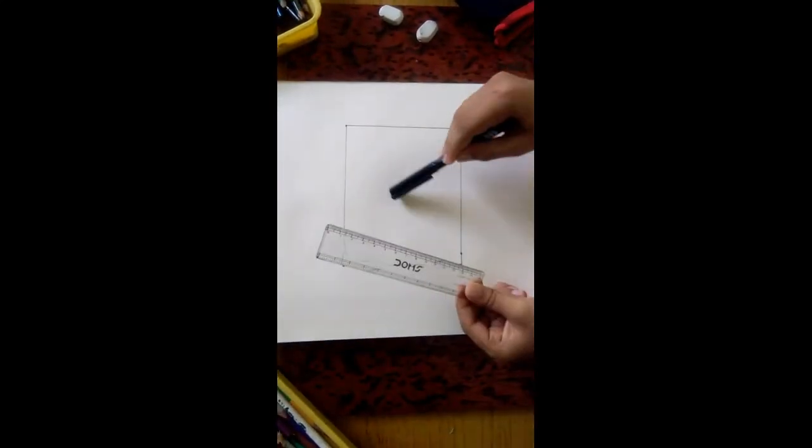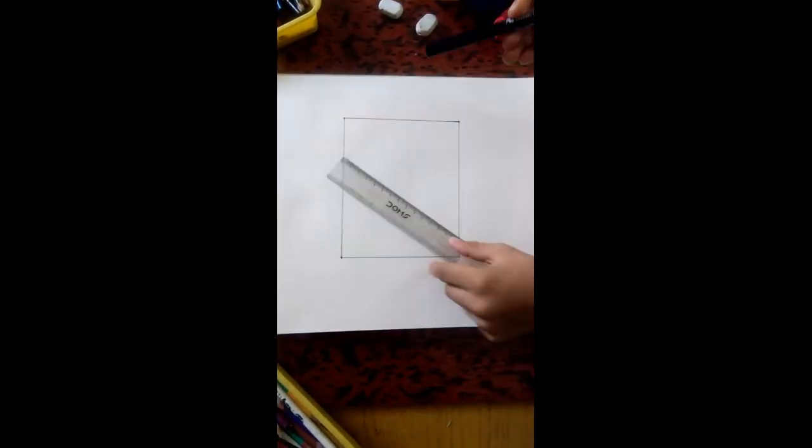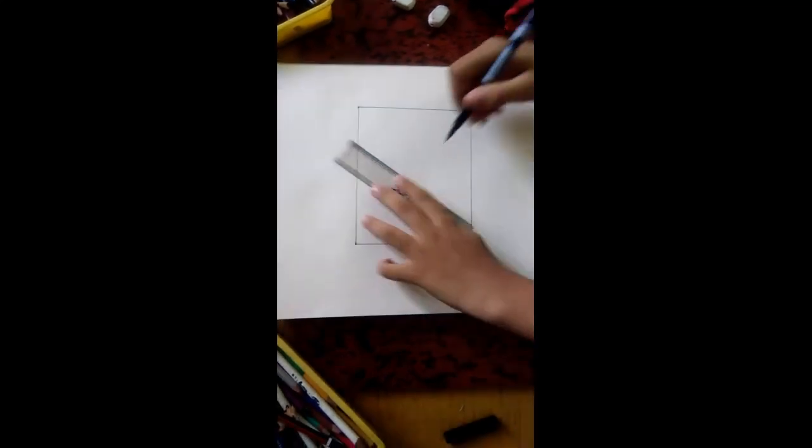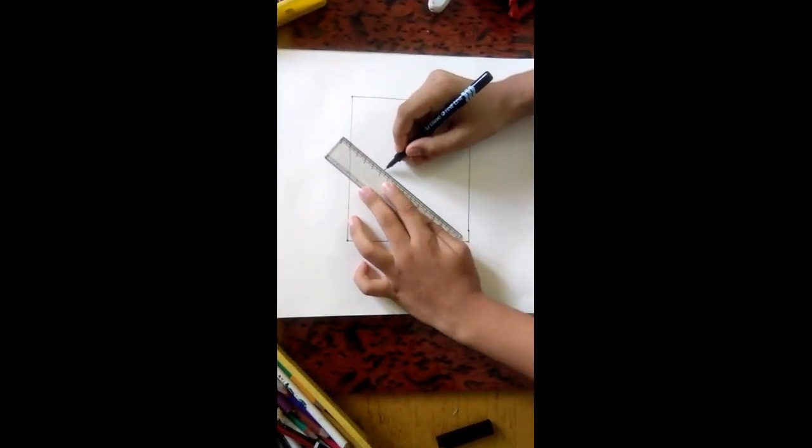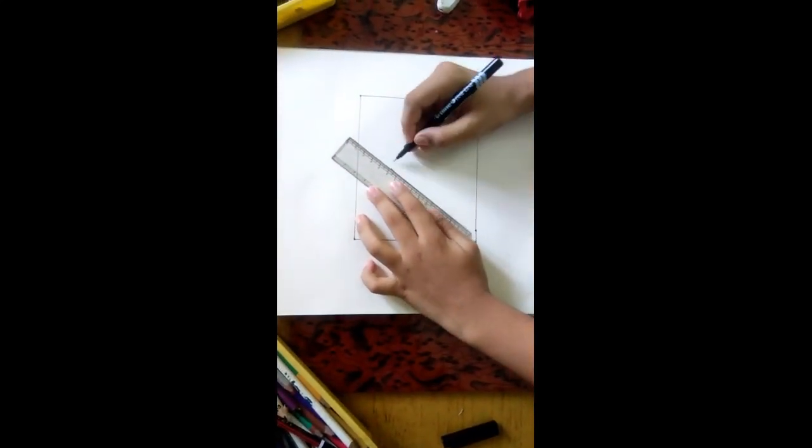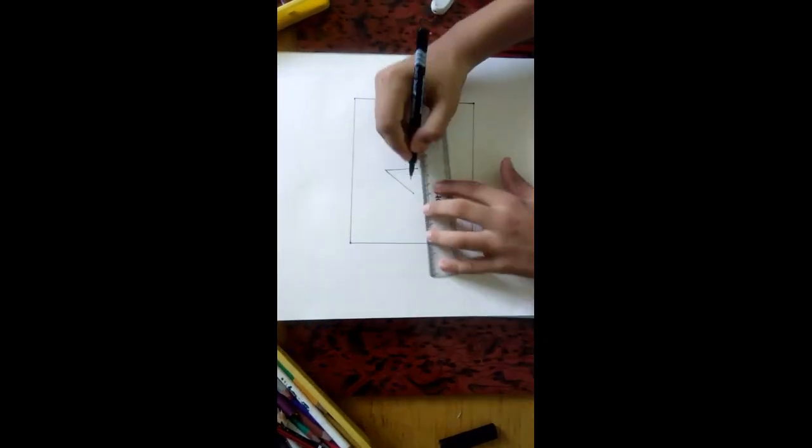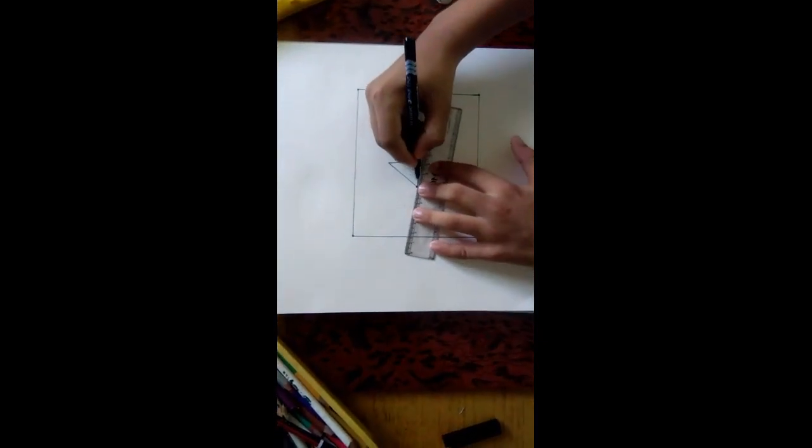Now let's start at the center. Draw any shape you want. I'm going to draw a triangle like this and like this. It could be at any size.